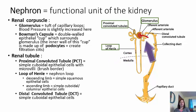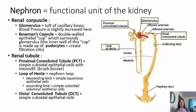The distal convoluted tubule, abbreviated DCT, is made of simple cuboidal epithelial cells and is the last chance to filter anything in and out. This is the area where hormones dealing with water retention and blood pressure — such as antidiuretic hormone and aldosterone — communicate. Because once it leaves the distal convoluted tubule and enters the collecting duct, it gets sent through the ureter and into the bladder, and it's lost. So this is where we make final adjustments to hold on to anything we specifically need.